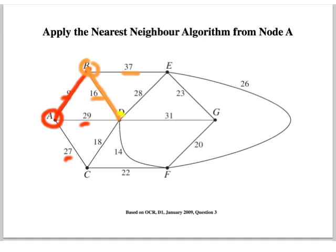We're then at node D, and we've got a choice of 28, 31, 14, 18. We choose the least, which takes us down to node F. Same choices: 22, 20, 26. We take the least, that gets us to node G.